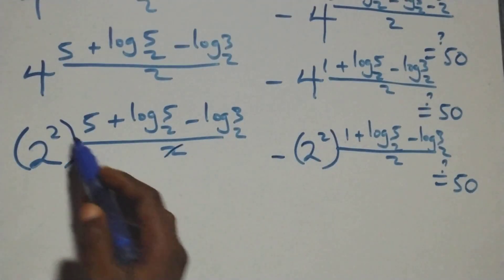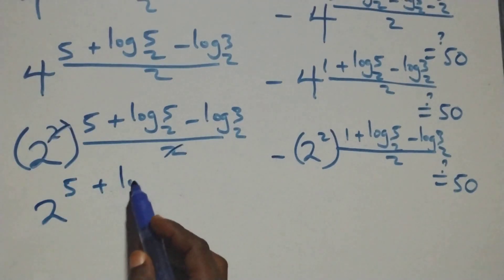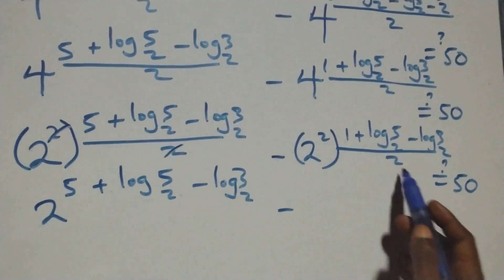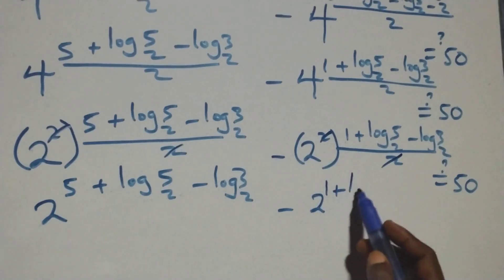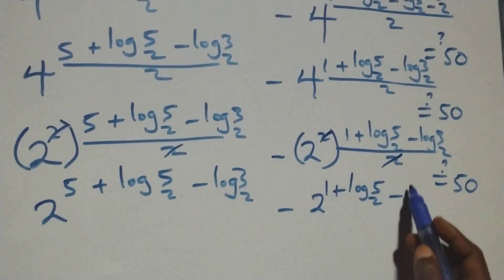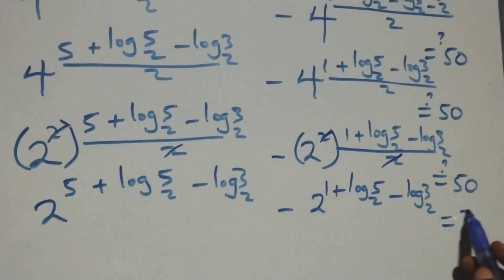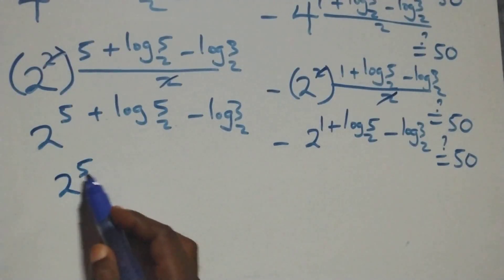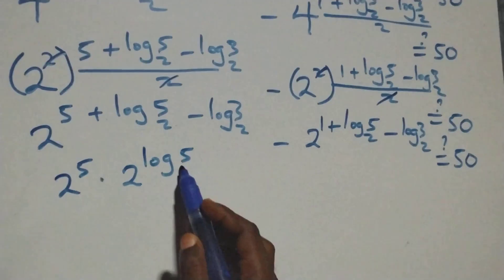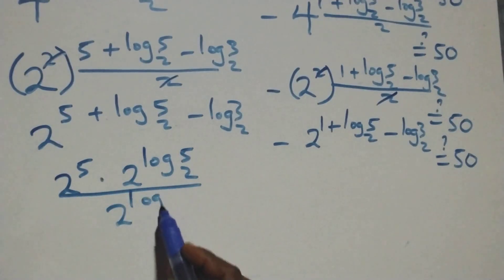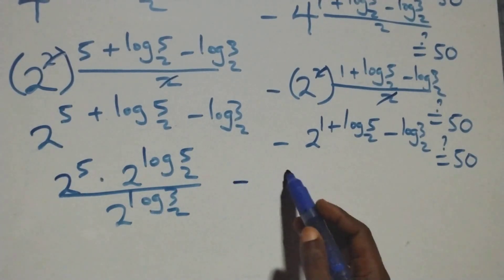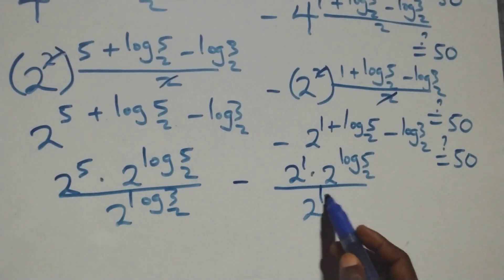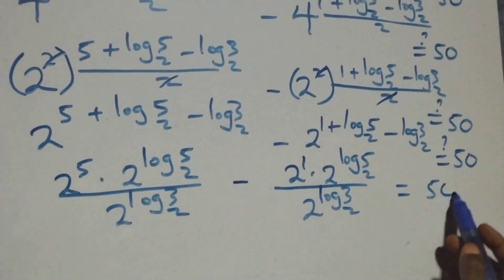Then this power multiplies: 2 here cancels each other. We have 2 raised to power (5 plus log 5 base 2 minus log 3 base 2), minus 2 raised to power (1 plus log 5 base 2 minus log 3 base 2). This is equal to 50 on this side. Then we apply laws of indices here. We can write it as 2 raised to power 5 times 2 raised to power log 5 base 2, divided by 2 raised to power log 3 base 2. This is equal to 50 on this side.